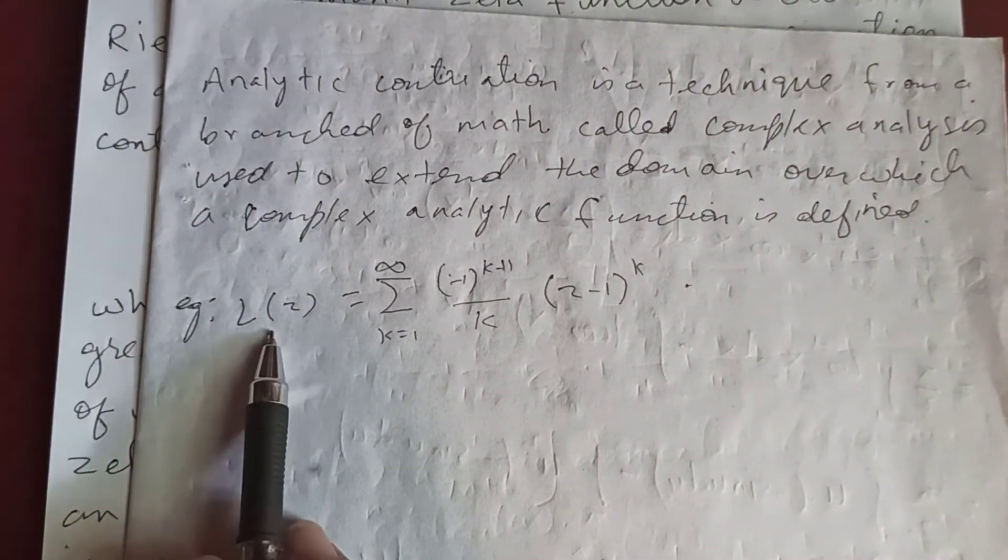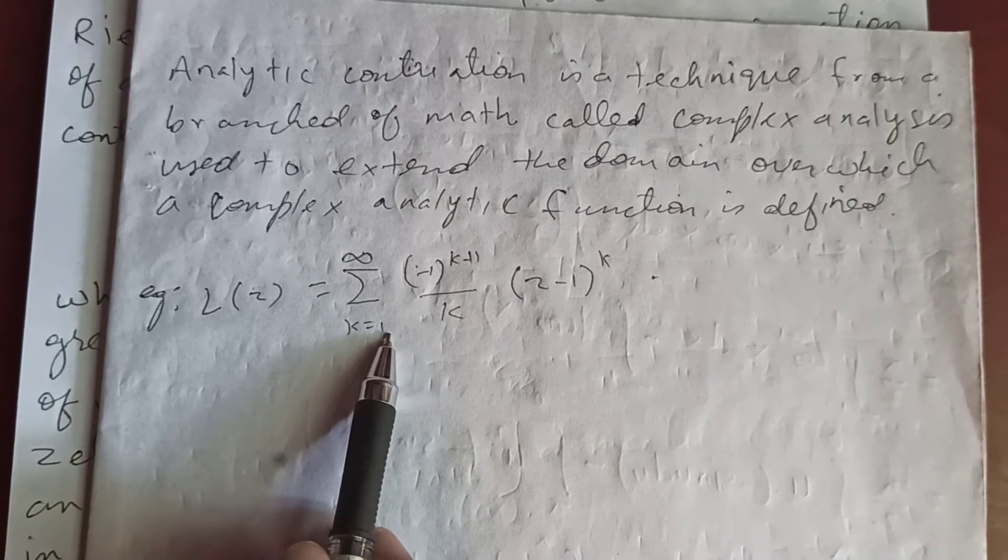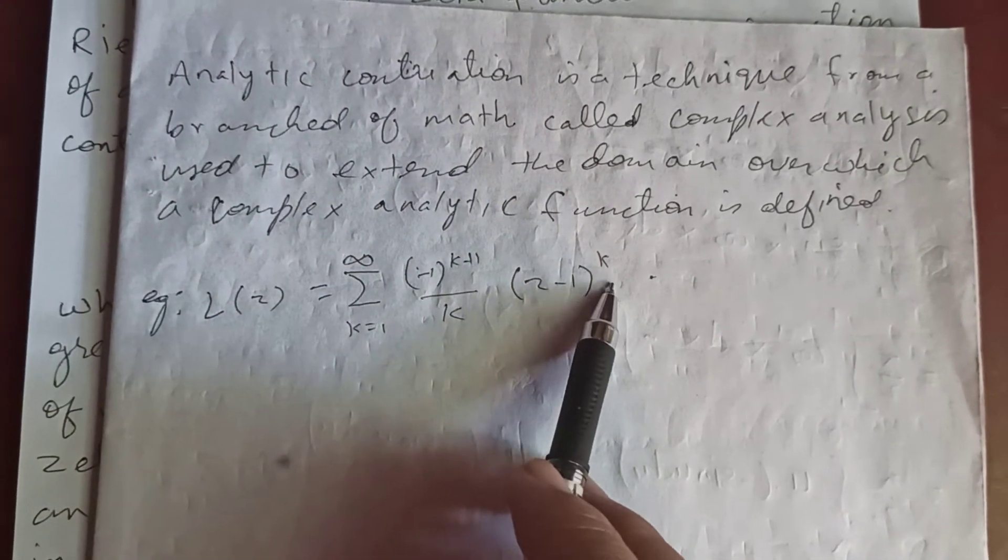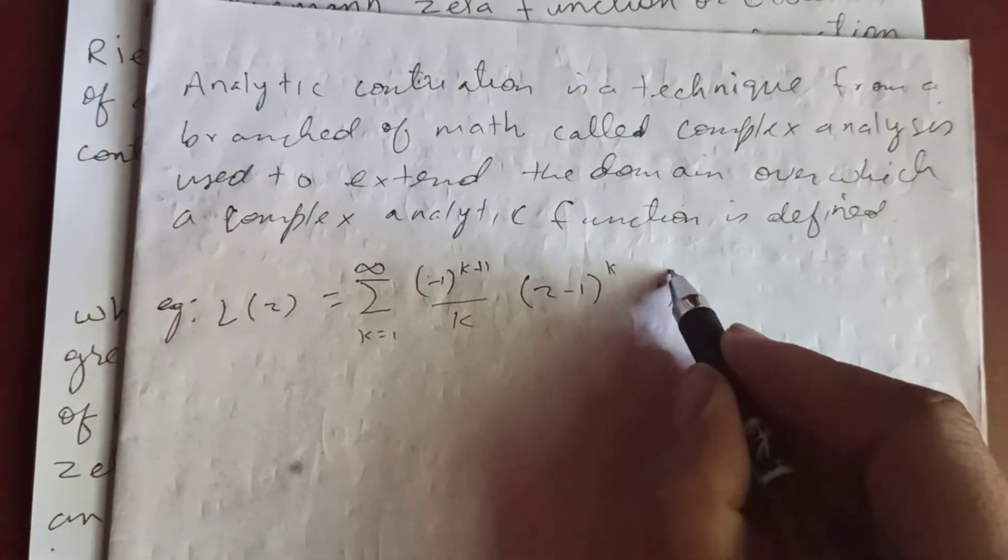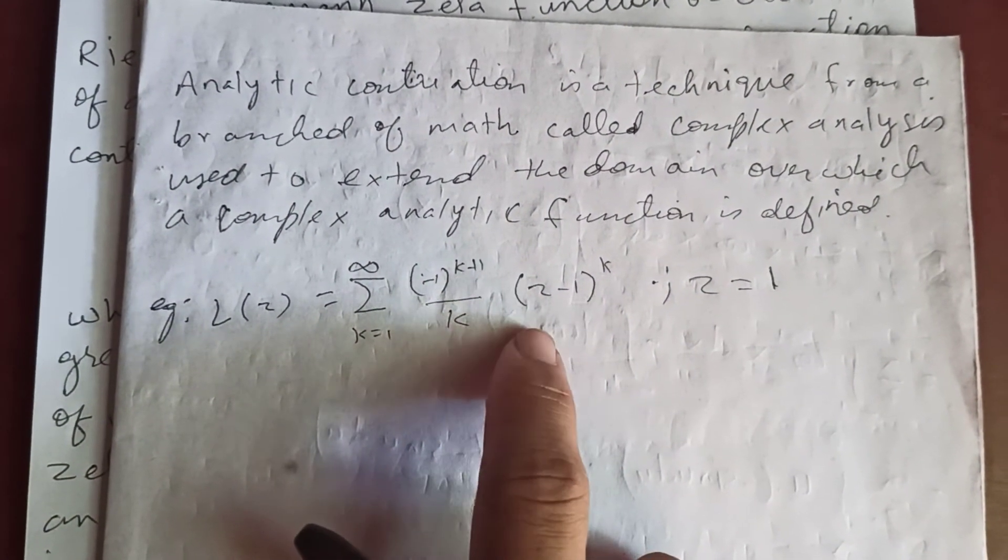Here's an example: L of z is sum from k equal to 1 to infinity minus 1 to the k plus 1 over k times z minus 1 to the power k. Here at z equal to 1 this will be 0.